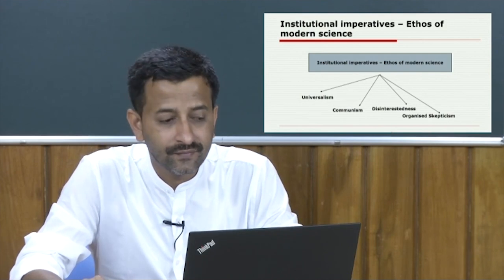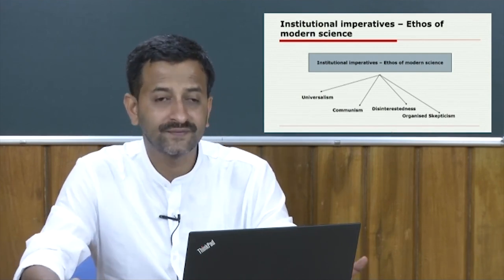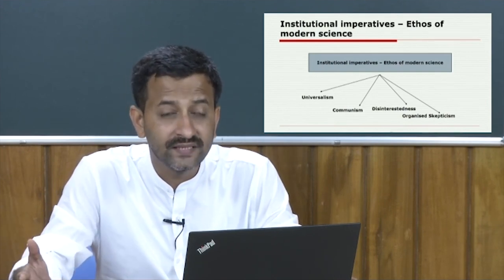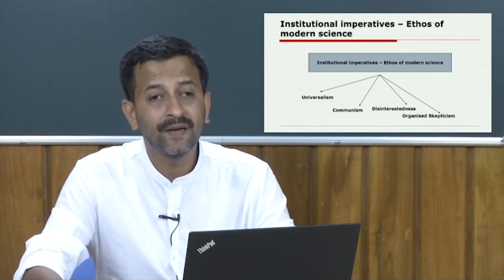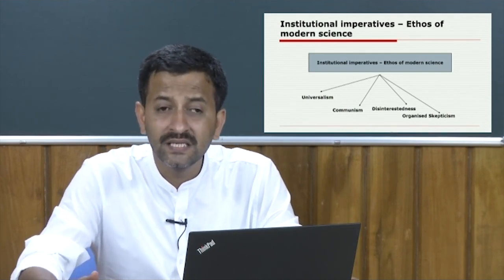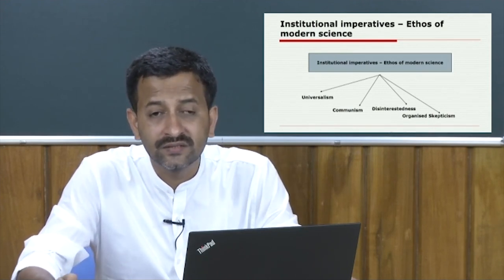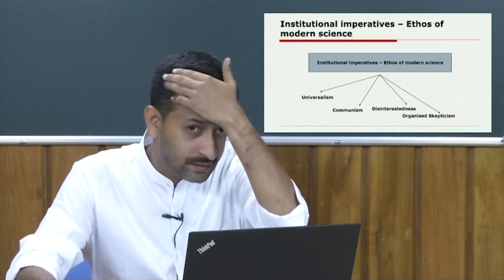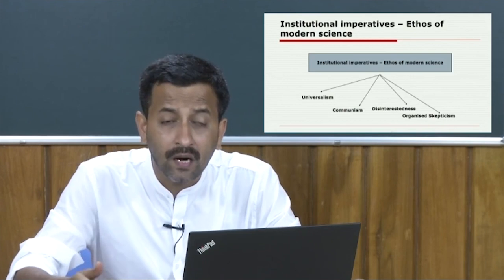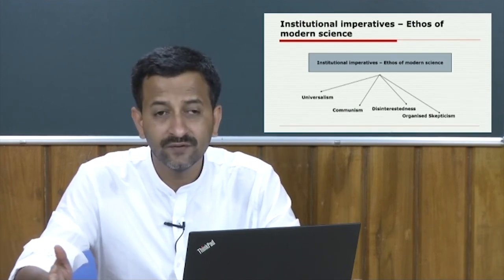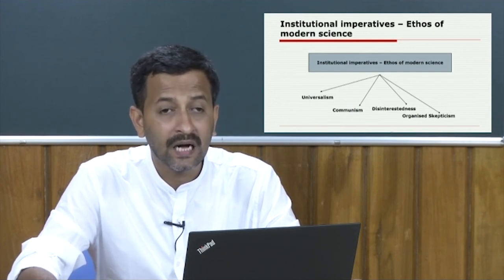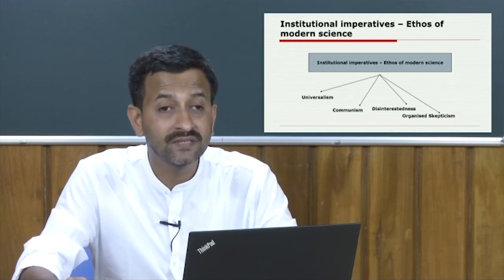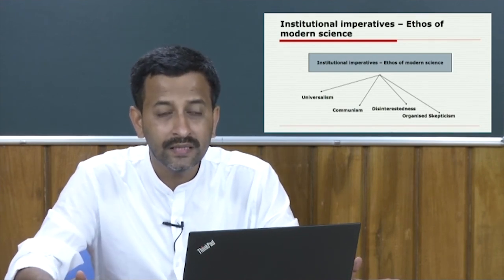We discussed the goal of science, which is the extension of certified knowledge. Then we discussed the imperatives of science derived from the goal and its methods. When Merton said method, he meant in terms of empirically confirmed and logically consistent statements of regularities. That is why science always starts not simply with observable facts, but also verifiable facts — if I say I have seen a ghost, I just cannot say that is real because it may not be verified under the scientific realm.